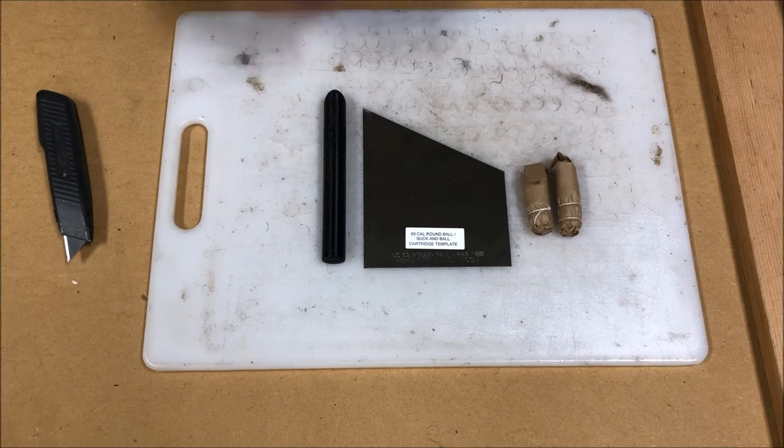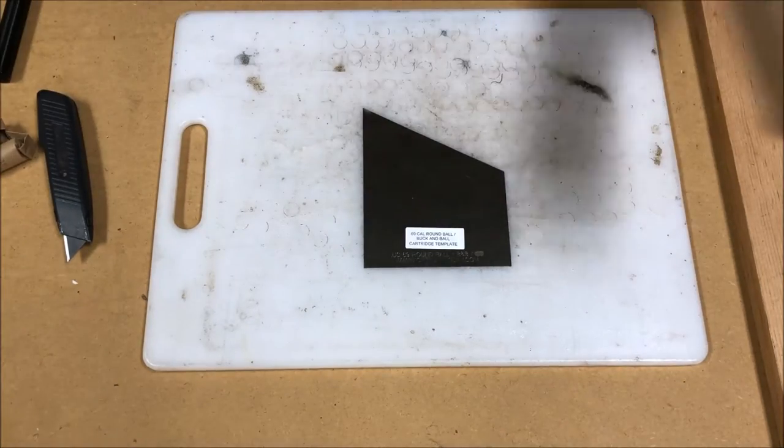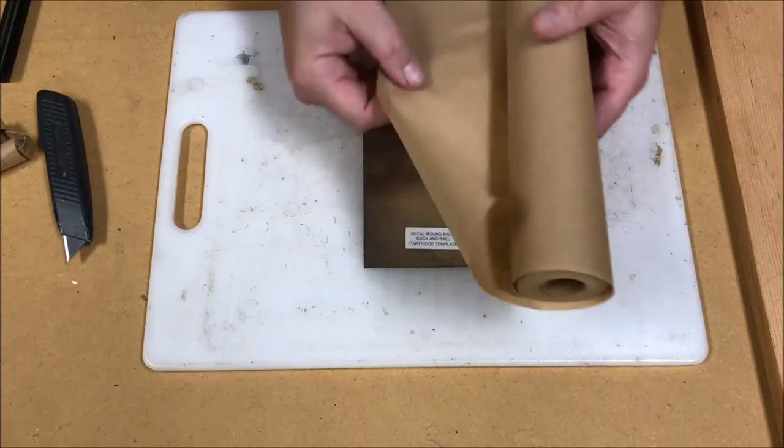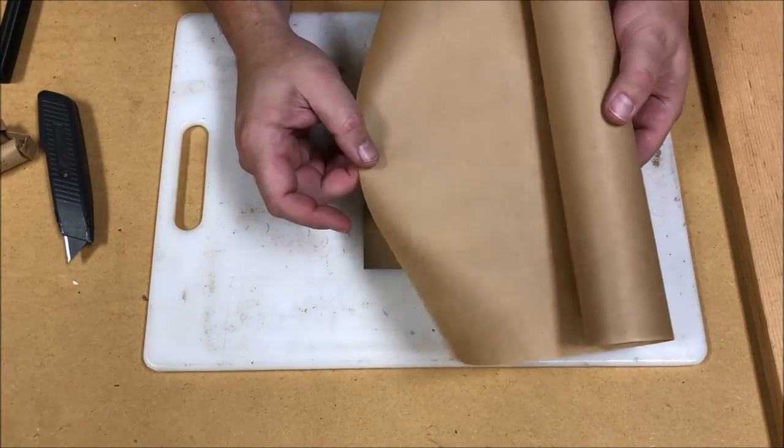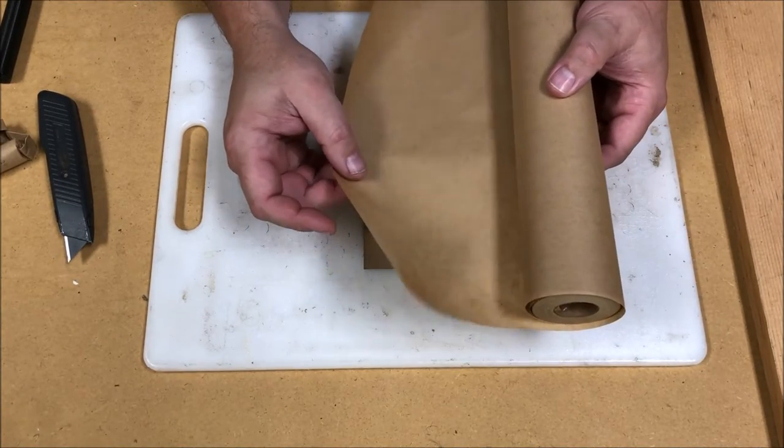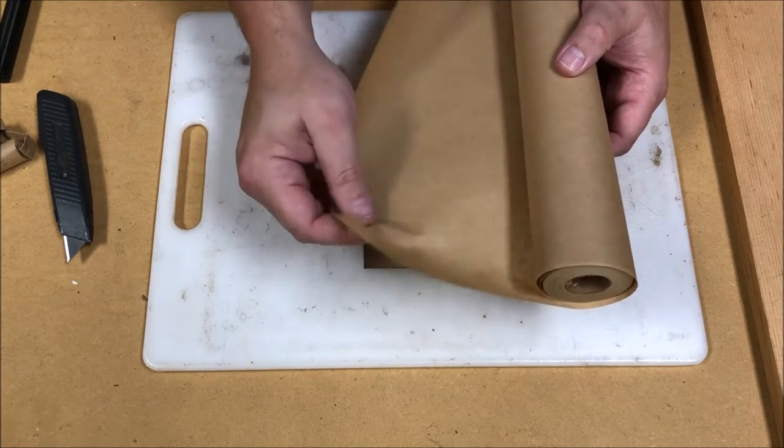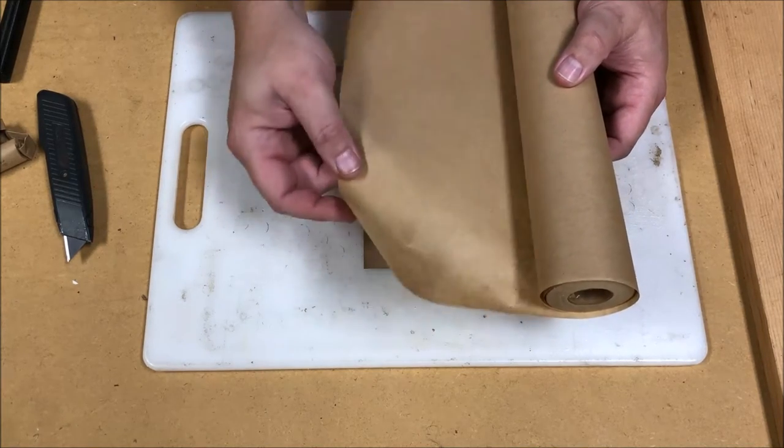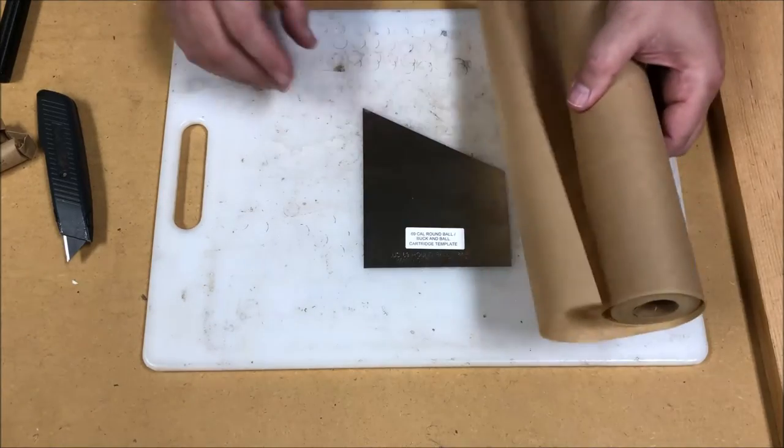So to get started, you're going to need paper. What I like to use is this wrapping paper that comes on a roll. You can get it at any big box home improvement store. It has the consistency of newsprint and it's a nice unbleached brown paper.